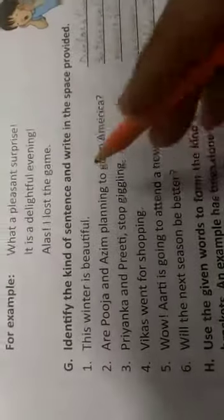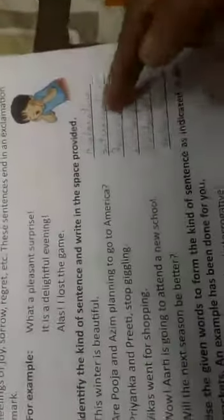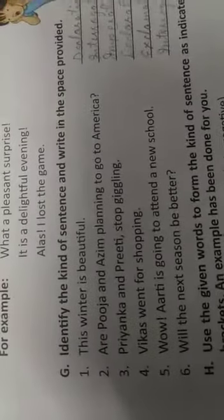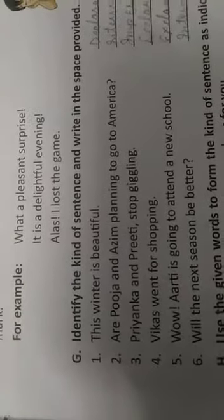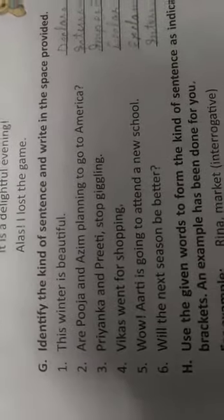First one: identify the kind of sentence and write it in the space provided. You have to know the kinds of sentences and write it there. There are four types — declarative, imperative, interrogative, and exclamatory.